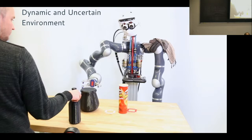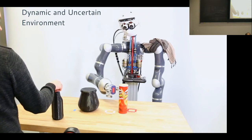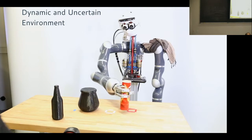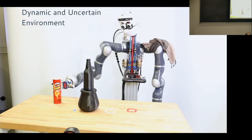One of the systems I worked on at the Max Planck Institute for Intelligent Systems in Tübingen was capable of coping with grasping and manipulation tasks in a dynamic and uncertain environment. Uncertain because it uses only onboard sensing — just cameras — to perceive the environment, the objects to grasp, and the obstacles it must avoid, which are dynamically changing.